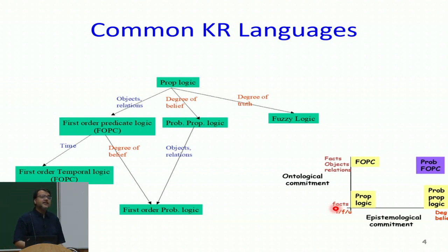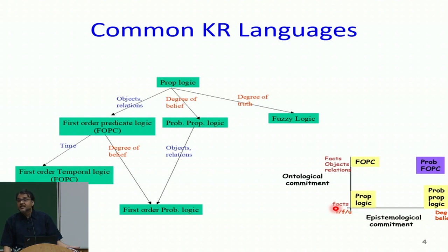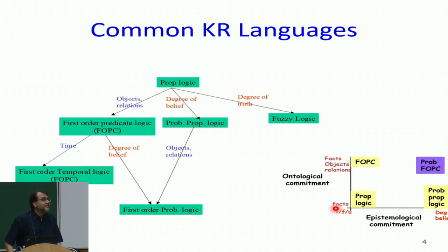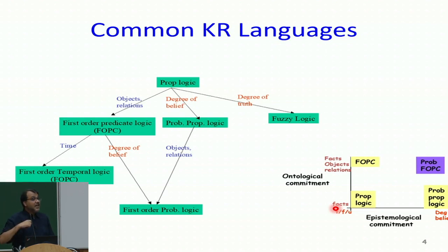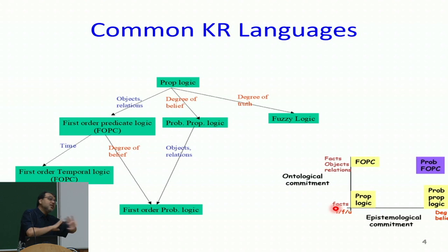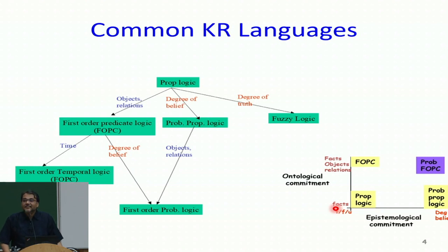In first order predicate logic, my ontological commitment includes objects, relations between objects, and facts formed when relations are applied on objects. In the language of atomic agents, a state was just a number. In propositional logic, a complete assignment of all state variables gave me a state. In first order logic, I have one more level of indirection: objects and relations, then applying relations on objects gives me state variables, and enumerating all of them gives me a state. So I am reducing the effort to specify a problem by incorporating more structure of the real world into my representation. The epistemological commitment stays the same: each fact can be true, false, or unknown.